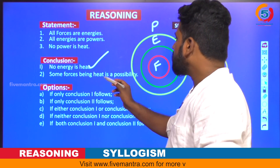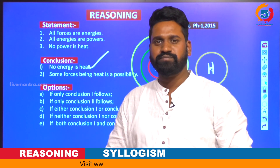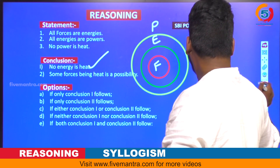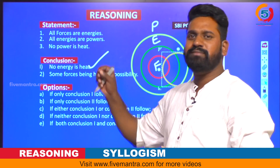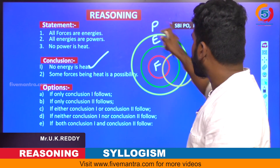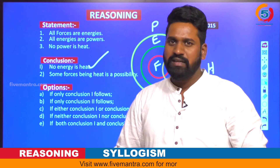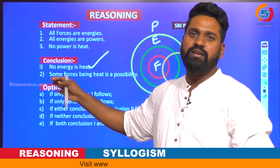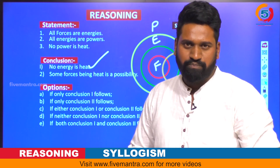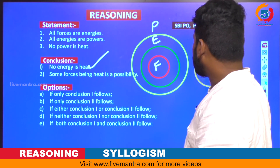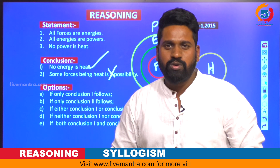Now checking the second conclusion: some forces being heat is a possibility. If we try to intersect heat with force, that intersection would also touch the powers circle, which violates 'no power is heat.' Without contacting power, we cannot intersect force with heat. Therefore, the second conclusion is absolutely wrong.